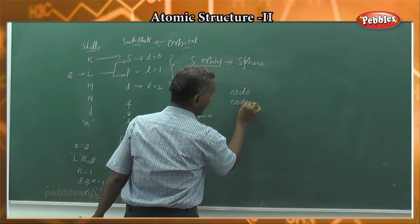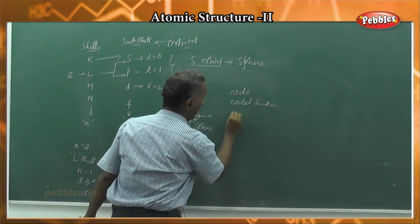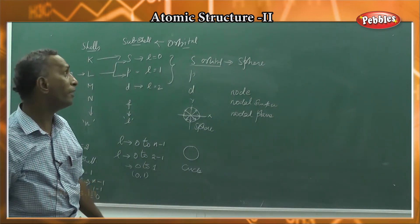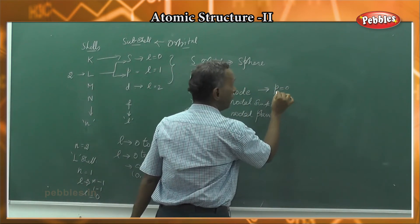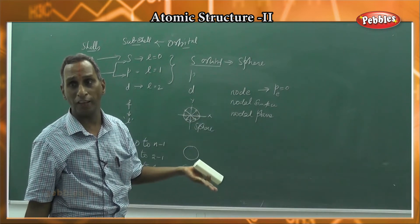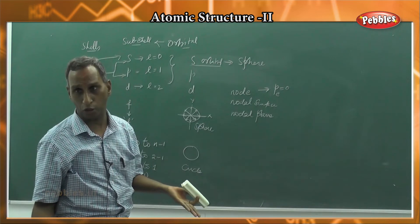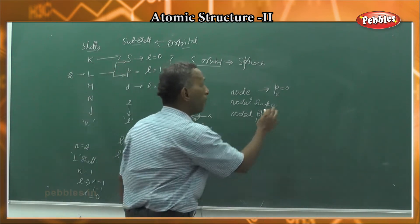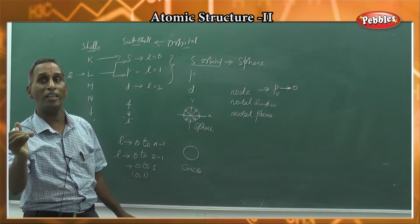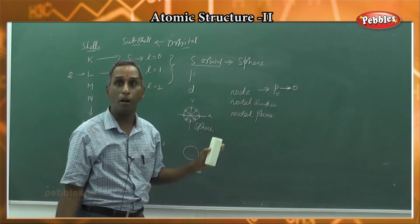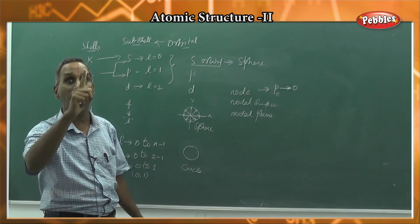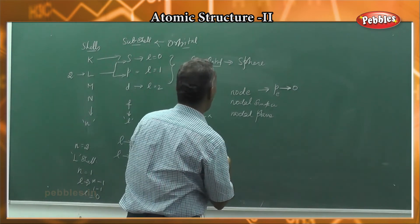In orbital terms, there is the node, nodal surface, and nodal plane. A node is defined as the area where the probability of finding the electron is zero — that is the node or nodal plane. You cannot find the electron there; the probability of finding the electron tends to zero, which is the minimum. So the node is where probability is minimum, whereas the orbital is where probability is maximum.